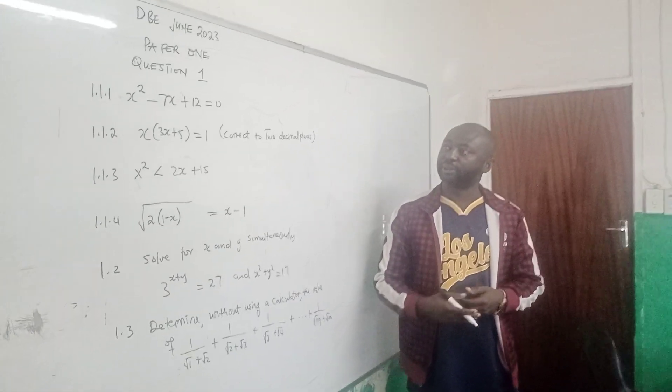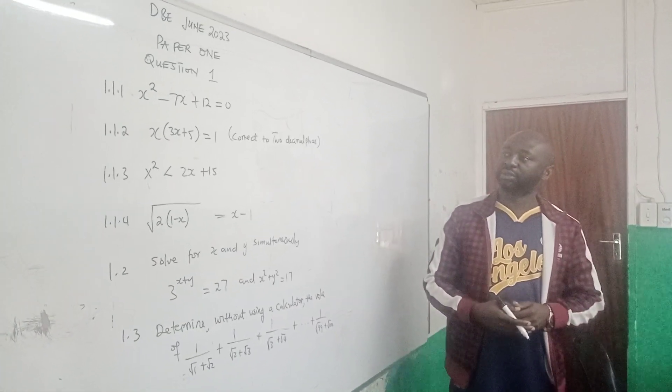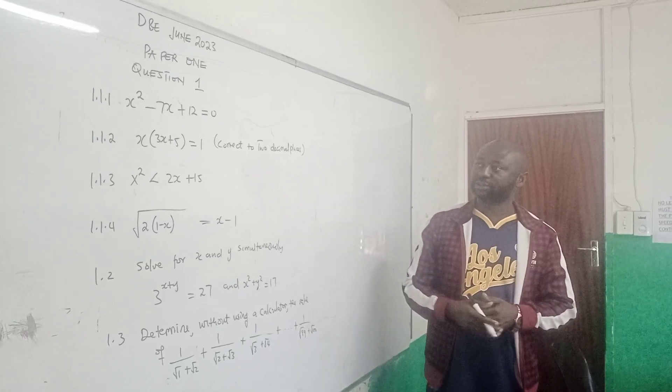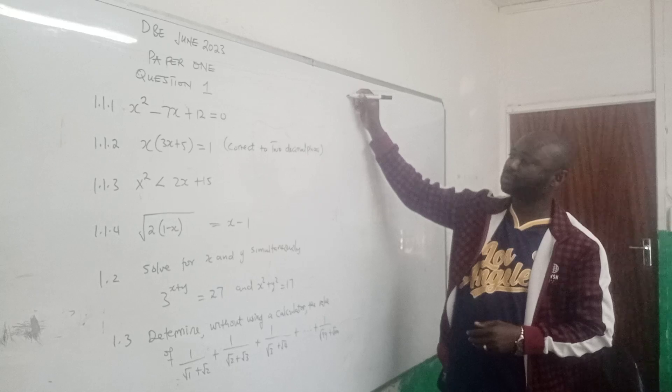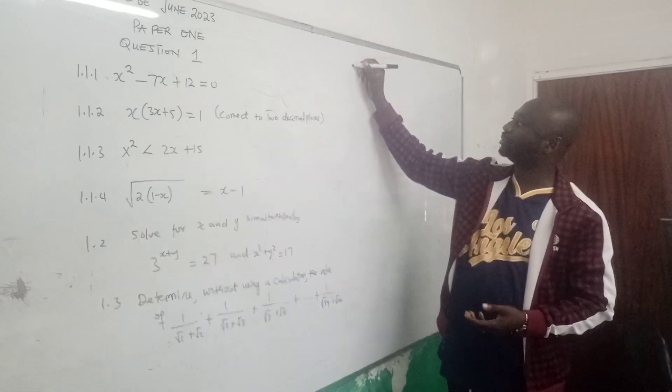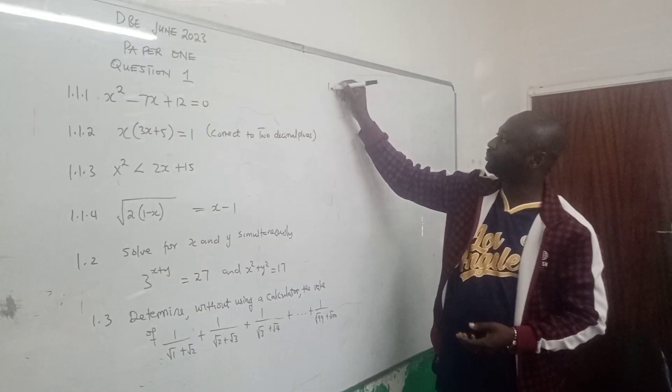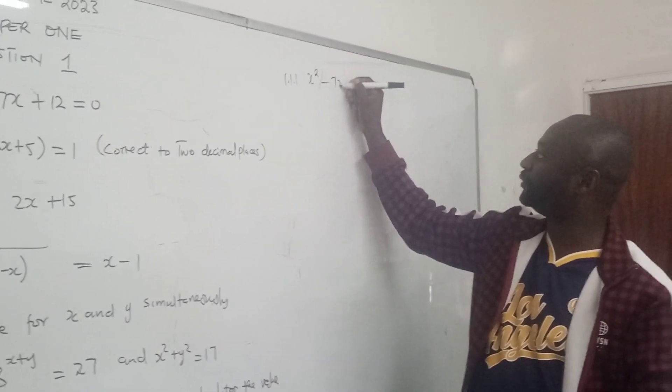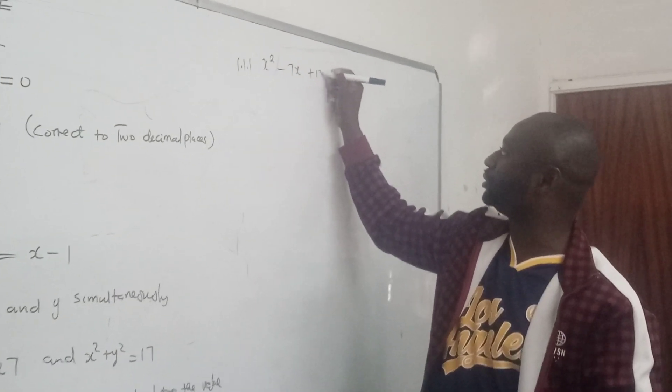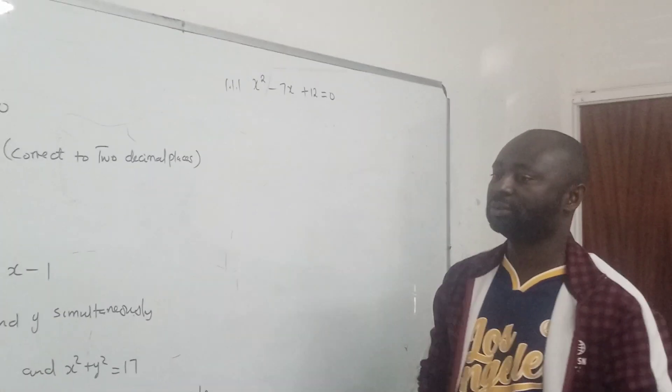The June 2023 paper that was just written last Friday, we will start with the algebraic part. Question number 1.1.1 says solve for x, so they give you 1.1.1 x squared minus 7x plus 12 equals to 0 to solve.